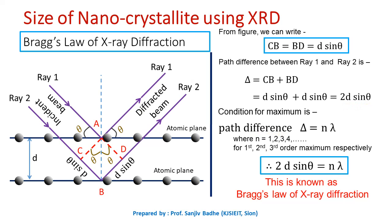If this path difference is integral multiple of wavelength of X-rays, then the two rays interfere constructively giving rise to the maximum. And this condition for maximum is nothing but Bragg's law of X-ray diffraction.